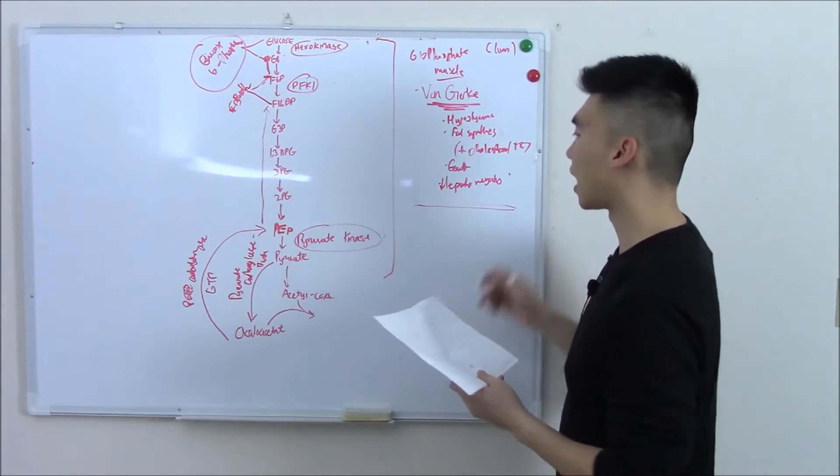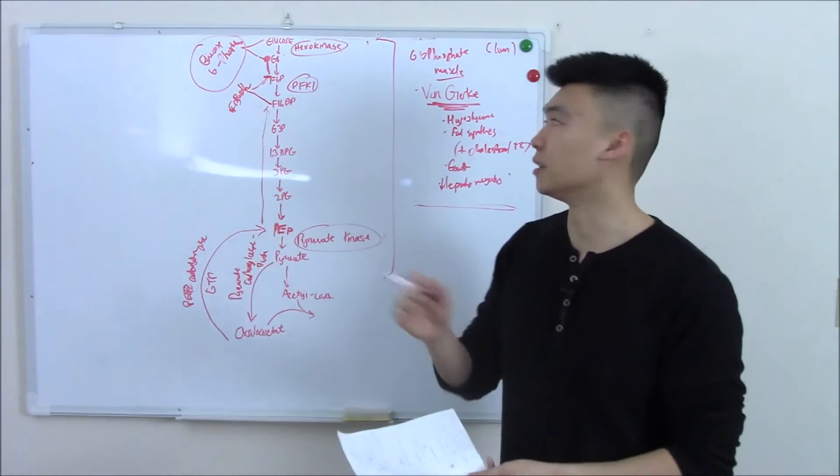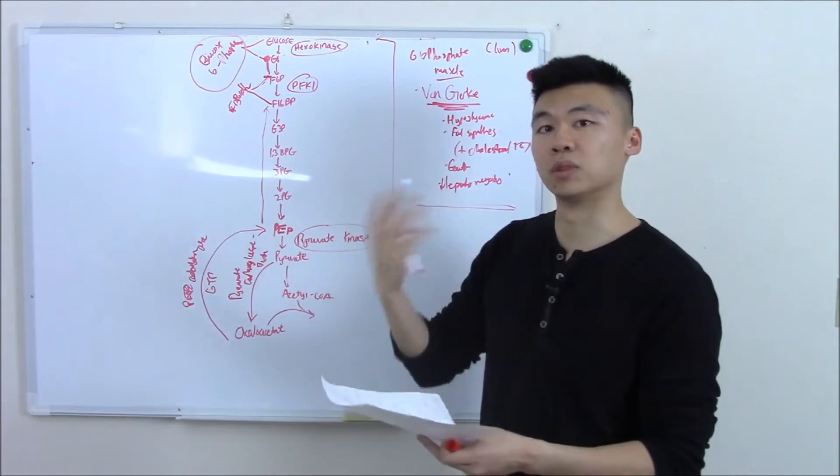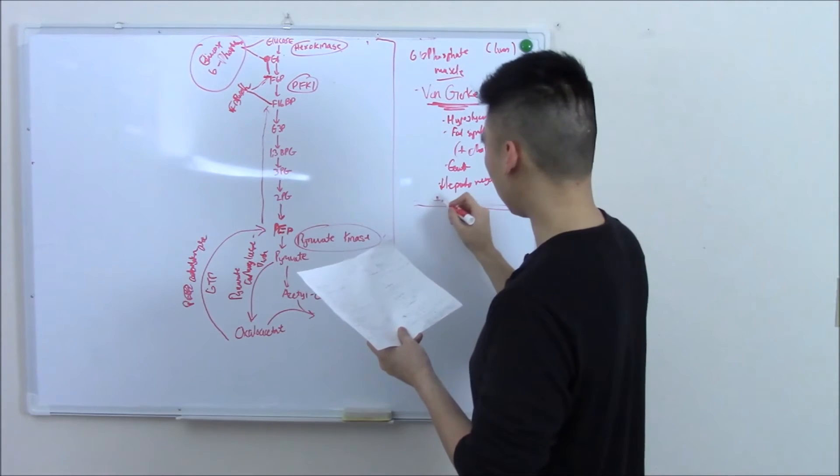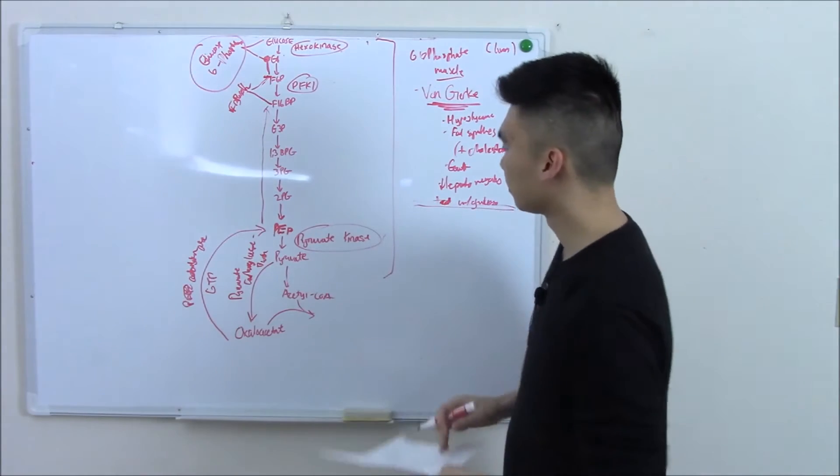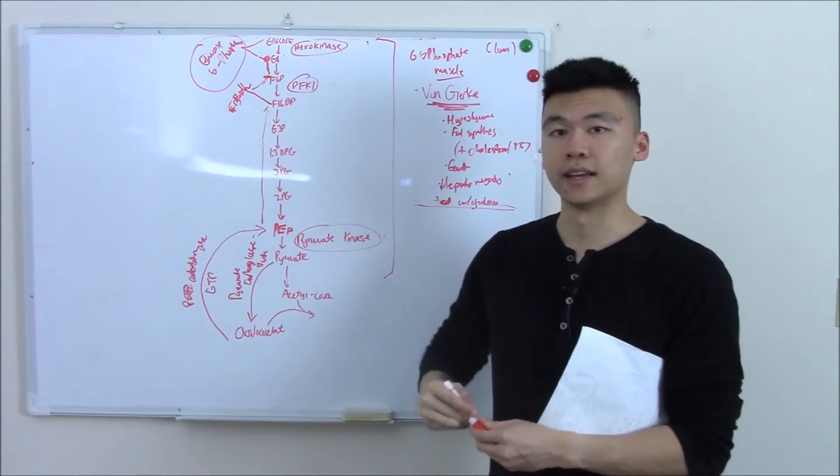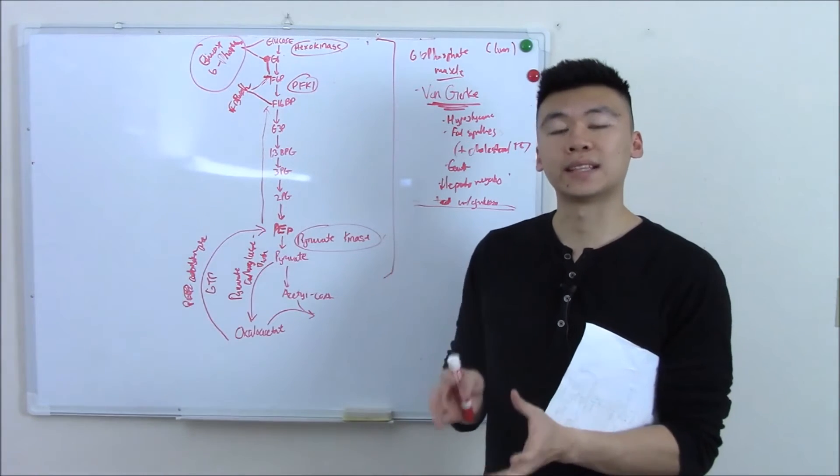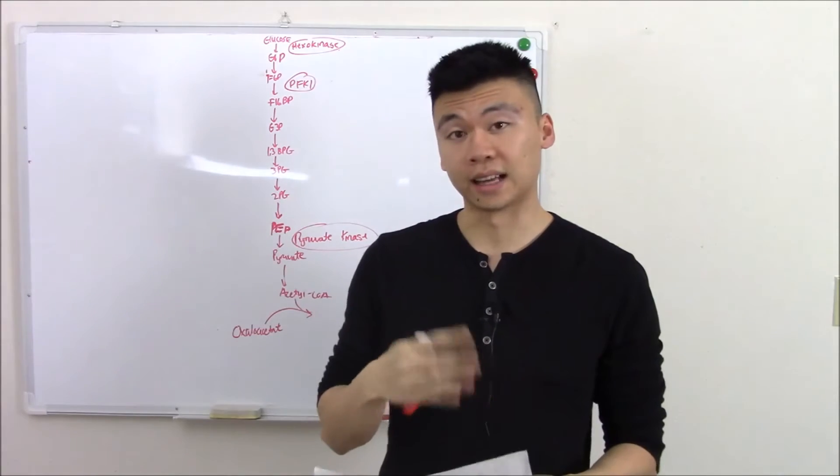Try to treat this by making sure the baby feeds so they're not fasting, they don't need to go through this pathway. Their blood always has sugar, so treat with glucose. That's gluconeogenesis.